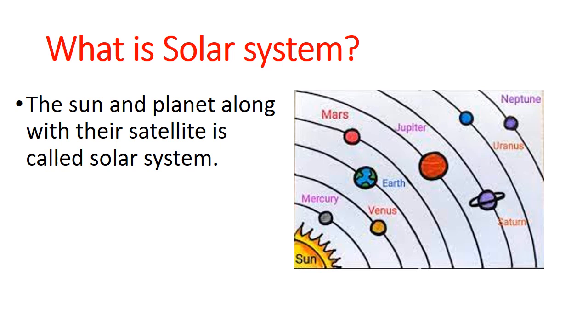What is solar system? The sun and its planets along with their satellites is called solar system.